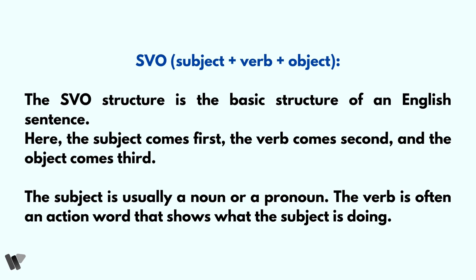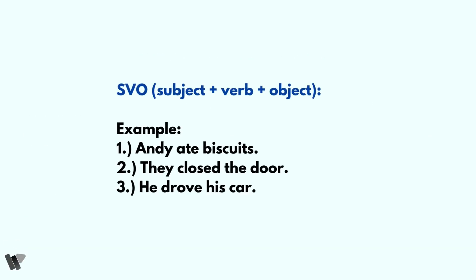SVO stands for subject, verb, plus object. The SVO structure is the basic structure of an English sentence. The subject comes first, the verb comes second, and the object comes third. The subject is usually a noun or a pronoun. The verb is often an action word that shows what the subject is doing.